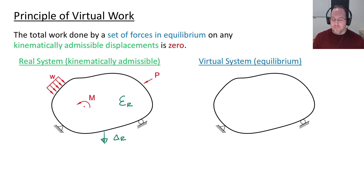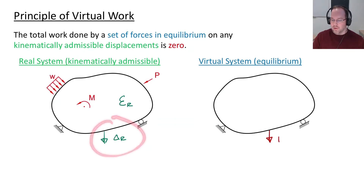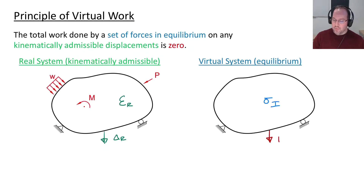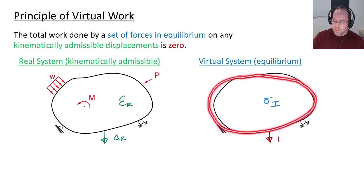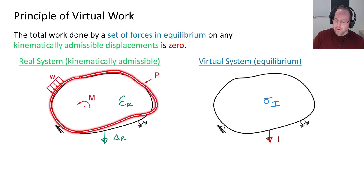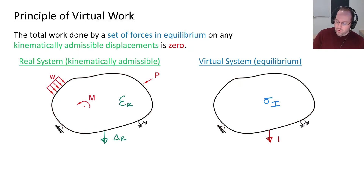Second, we'll consider a virtual system — this will be our set of forces in equilibrium. We place a unit force of one at the location and in the direction of the displacement we want to calculate. For this virtual system we can calculate the stresses throughout the entire volume, and then combine the two systems: using the forces and stresses from the virtual system and the displacements and strains from the real system to form the principle of virtual work expression for delta_r, which is the integral over the entire volume of the virtual stresses multiplied by the real strains.